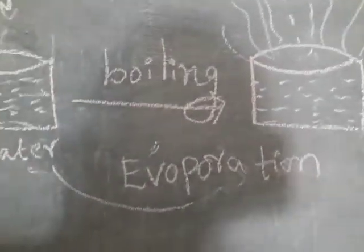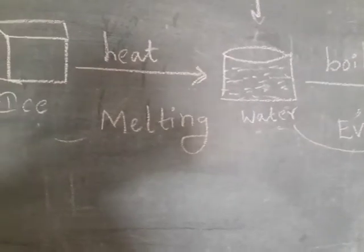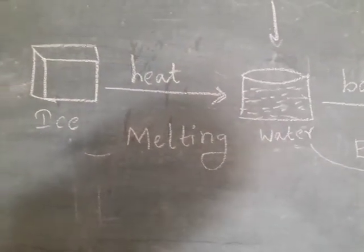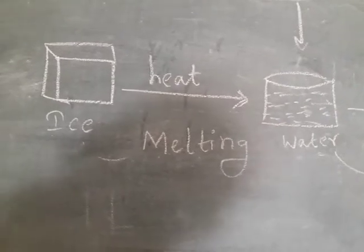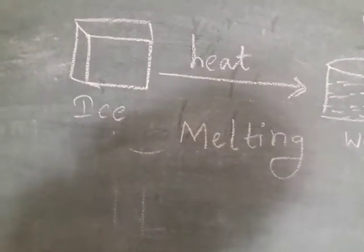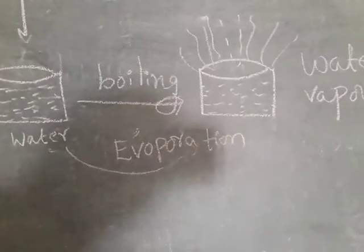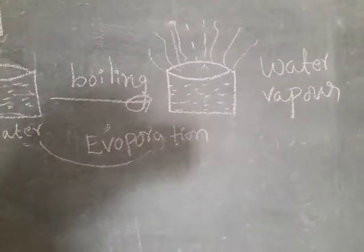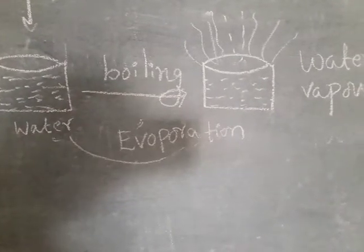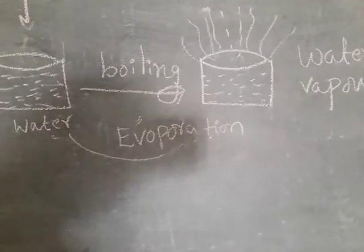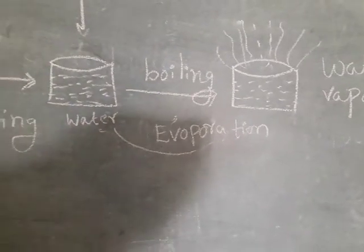This process is called evaporation. So first, ice: we heat the ice cube and it changes to water — this process is called melting. Then when water is heated or boiled, it is converted into water vapor — this process is called evaporation.